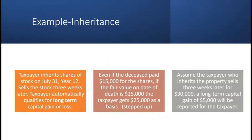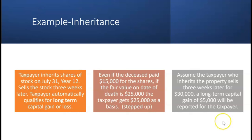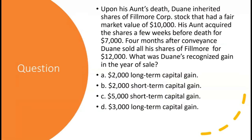So instead of the $15,000 basis rolling over, the taxpayer who inherits steps up to the full $25,000 fair market value — that's their basis. Assuming that taxpayer sells three weeks later for $30,000, a long-term capital gain of $5,000 will be reported. They compare proceeds of $30,000 with their stepped-up basis of $25,000, resulting in a $5,000 long-term capital gain, even though they only held the asset for three weeks and didn't pay anything for the stock.